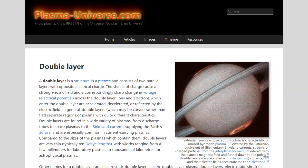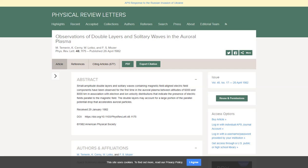Double layers are found in a wide variety of plasmas from discharge tubes to space plasmas to Birkeland currents supplying the Earth's aurora and are especially common in current-carrying plasmas. And here we can see a paper in 1982 showing observations of double layers and solitary waves in the auroral plasma. So it's well known.